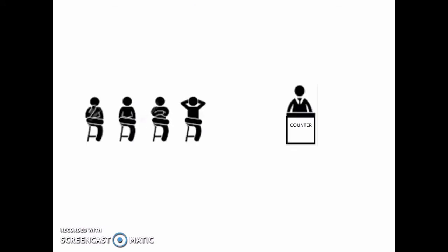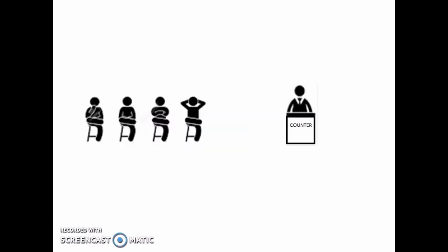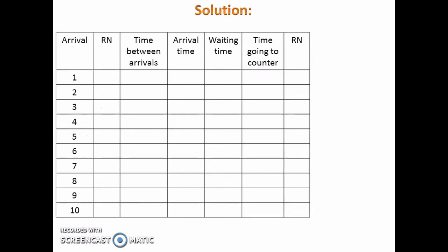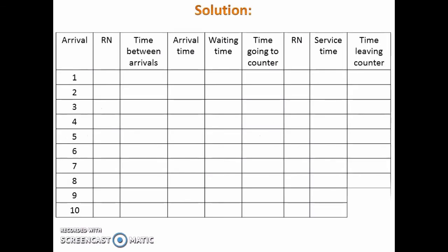After a person arrives, he or she will wait before going to the counter, so put a column for waiting time. After waiting, the person will get his or her turn to go to the counter, so put a column for time going to the counter. When the person goes to the counter, he or she will spend some time to get the service. So we need a column for service time. But since service time is a variable, we must first put a column for random number before a column for service time. After getting the service, the person will then leave the counter, so put a column for time leaving the counter.